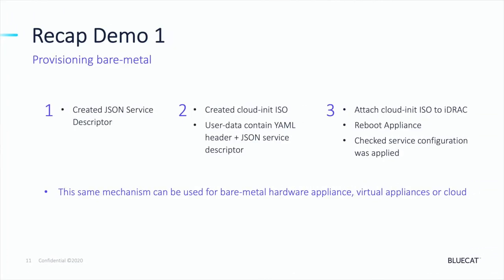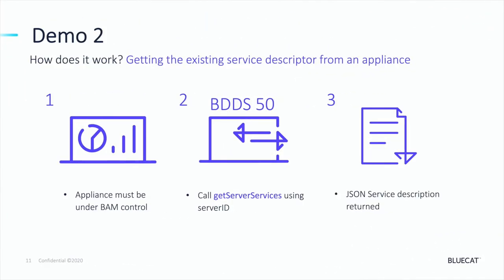Let's recap what we've seen in Demo 1. We've provisioned a new BDDS hardware appliance and seen how the new JSON service descriptor for our BDDS25 can be applied to provision a new blank appliance from scratch. We've created a Cloud Init ISO file using the gen-iso-image command and attached it to the virtual media of the iDRAC card. Upon reboot, we've checked in the console and the BAM GUI that it's been correctly provisioned. Please note that the same mechanism can be used with physical, virtual, or cloud appliances going forward.